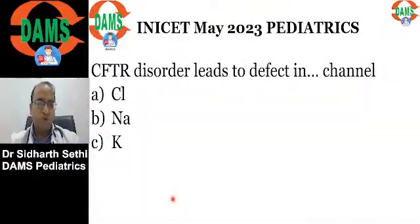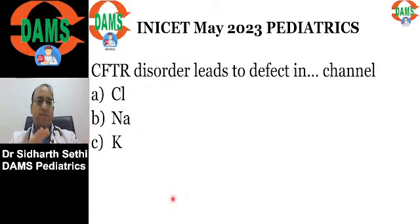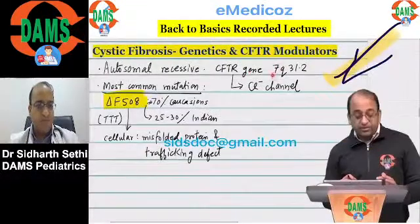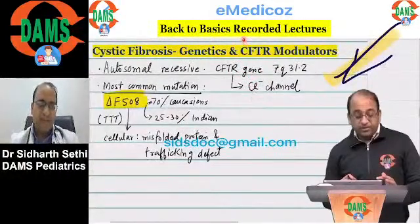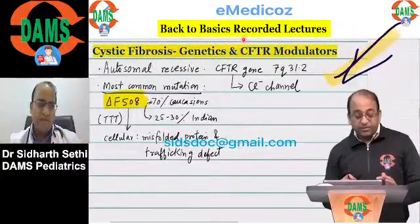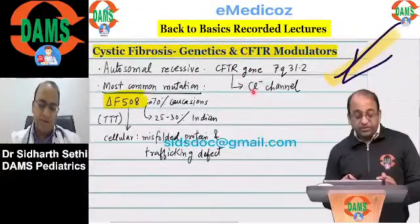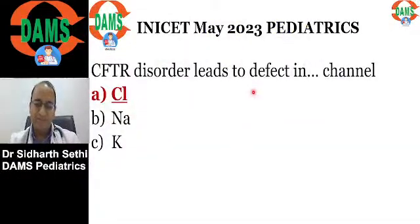There was a simple question on CFTR and cystic fibrosis. The CFTR gene codes for the chloride channel — that is the key point. Cystic fibrosis is a very important and commonly examined topic, and this is a straightforward question: it's the chloride channel.